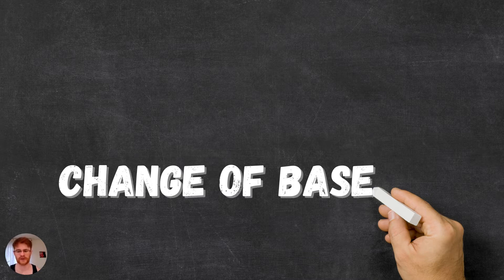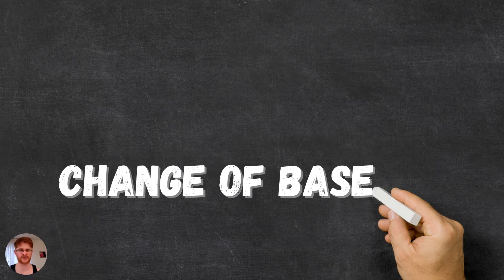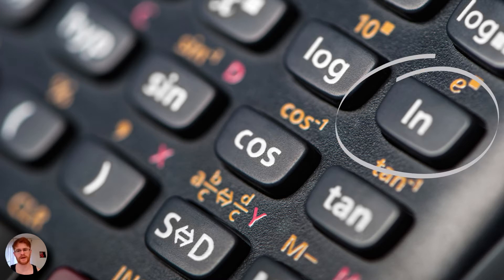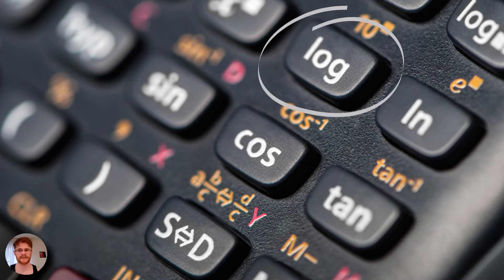Now let's look at an example of how this could be useful. If we consider the log buttons you see on a typical scientific calculator, we see that we only have buttons for the log of base 10 and also the log of base e, or the natural log.